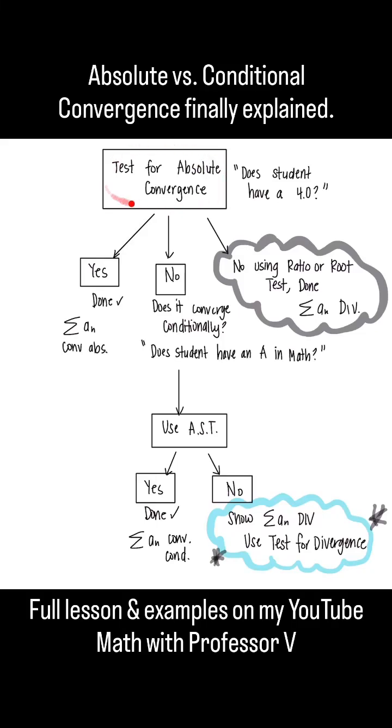Test for absolute convergence first. This is like determining the answer to the question, does the student have a 4.0? If it's yes, then you're done.